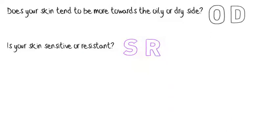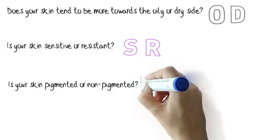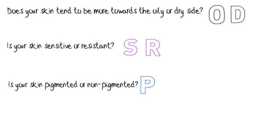If your skin has either dark spots, freckles or an uneven tone, choose P, or else choose N.